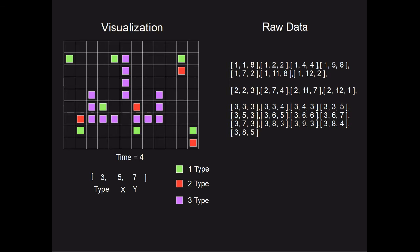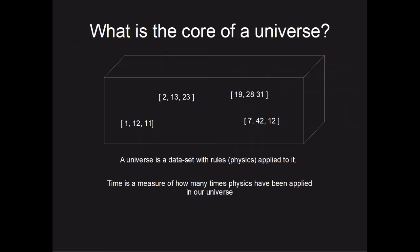On the left is a representation of the universe where each type of particle is a specific colour, and on the right is all the information of the universe displayed in a numerical format. A universe is just a set of data which has rules applied to it over and over again, which we measure as time in our universe. Time is just the number of times the rules of physics have been applied to the universe. We can see exactly how a computer simulates a universe — simply by applying some calculations to a data set. If we did this with our universe, it would be indistinguishable for anything inside the simulation, because the rules and data set would appear exactly the same, which really means it is our universe represented inside a computer through a set of calculations.